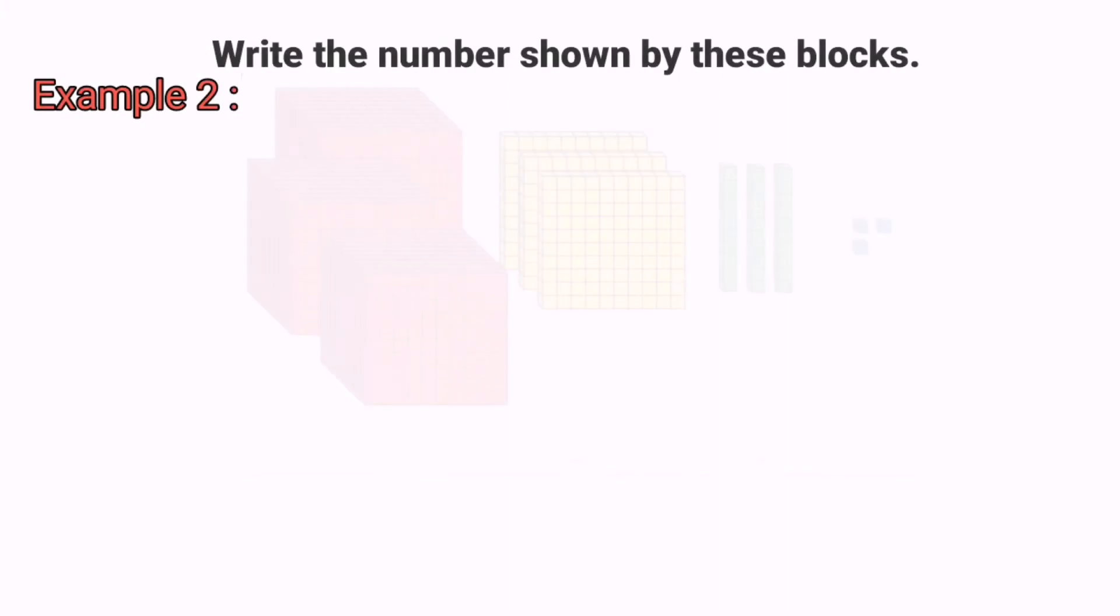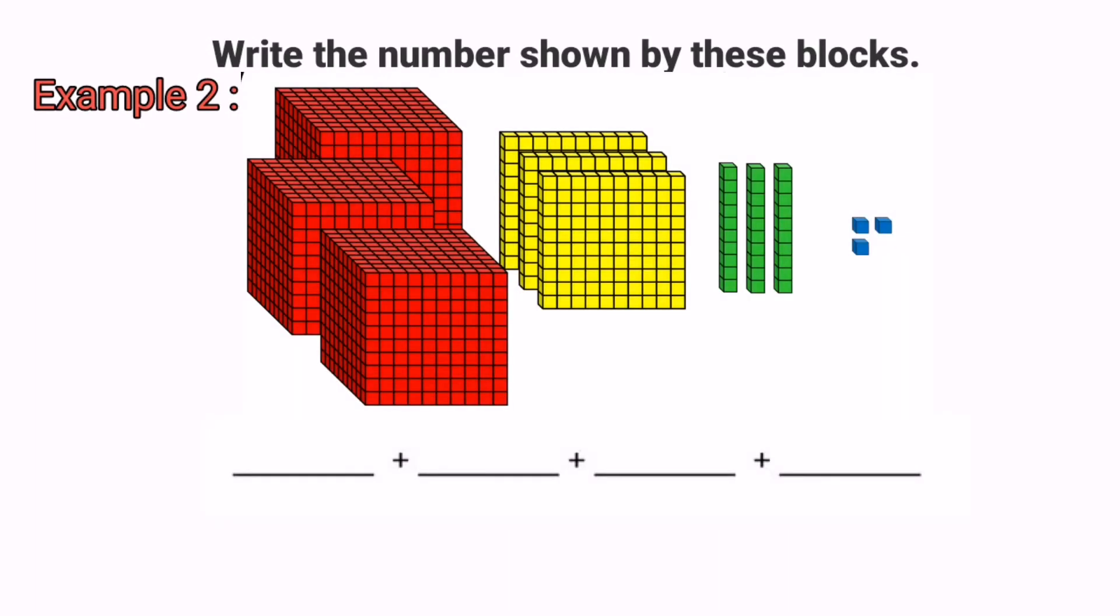Now we are going to example number 2. Here we have 3 cubes to represent 3,000, three flats is 300, three longs is 30, and three shorts is 3. The total number is 3,333.